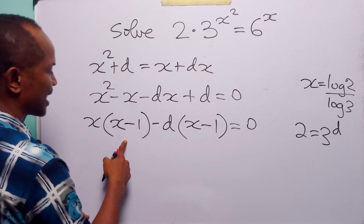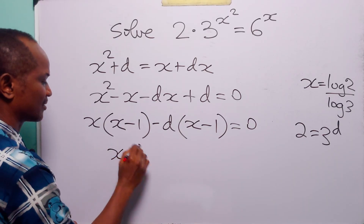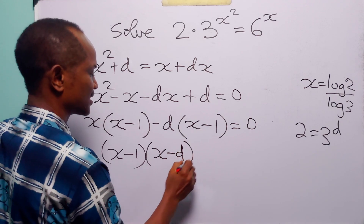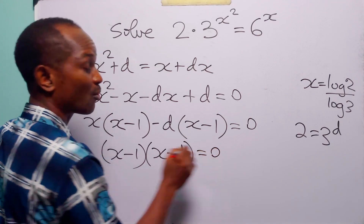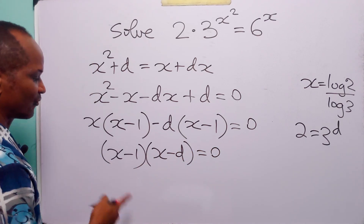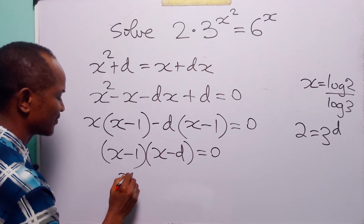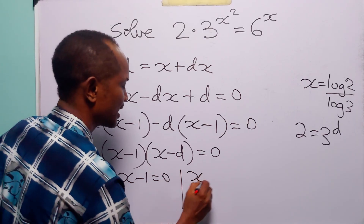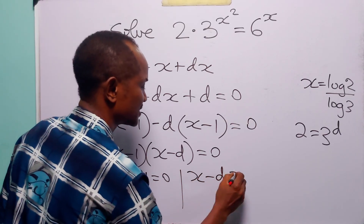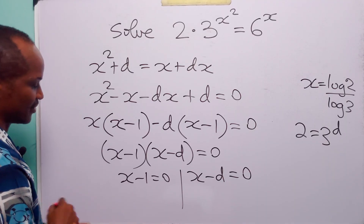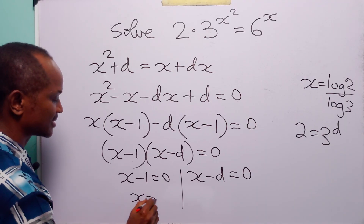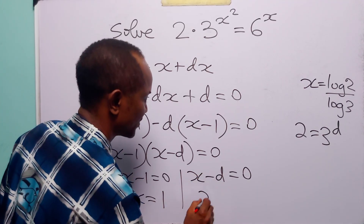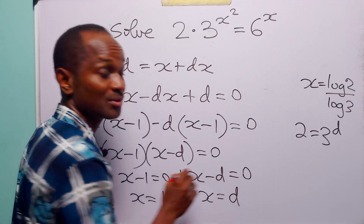So we have x times x minus 1, multiplied by x minus d, is equal to 0. From here, either x minus 1 equals 0, giving x equals 1, or x minus d equals 0, giving x equals d.